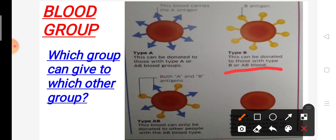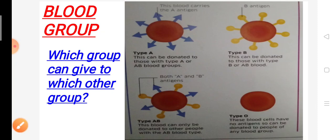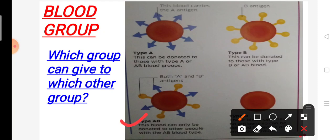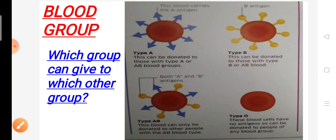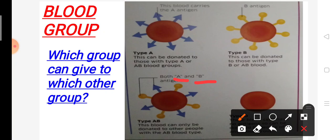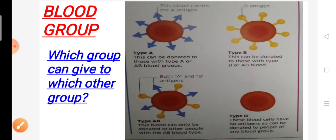Type AB blood group can receive from any blood group and can donate to other people with the AB blood type. AB has both A and B antigens. Type O blood cells have no antigen, so they can be donated to people of any blood group — this is why type O is called the universal donor.